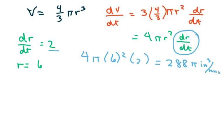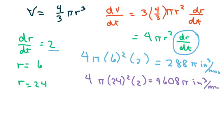And then the second problem when r was 24. So that would be 4 pi times 24 squared times 2, and that gives you 4,608 pi inches cubed per minute.